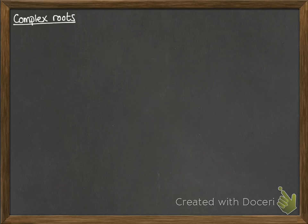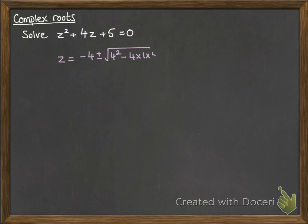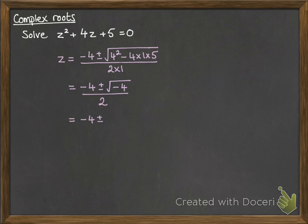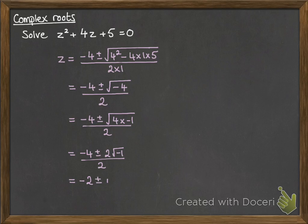Finally, complex roots — this is where it becomes actually really quite useful. If we want to solve z squared plus 4z plus 5 equals 0, we solve it like any quadratic using the quadratic formula. The problem you would have normally had is reaching the square root of minus 4 and being unable to move forward. But now we can: minus 4 is the same as 4 times minus 1, so we take the 4 out of the square root to get 2, giving 2 times the square root of minus 1, which by definition is i. Dividing through by 2 cancels those fractions, giving our answer: minus 2 plus or minus i.